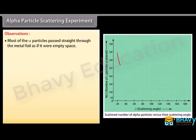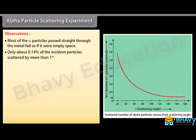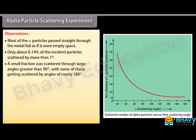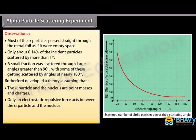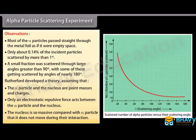Observations: Most of the alpha particles passed straight through the metal foil as if it were empty space. Only about 0.14 percent of the incident particles were scattered by more than one degree. Small fractions were scattered through large angles greater than 90 degrees, with some scattered by angles of nearly 180 degrees. Rutherford developed a theory assuming that the alpha particle and nucleus are point masses and charges, only an electrostatic repulsive force acts between them, and the nucleus is so massive it does not move during interaction.